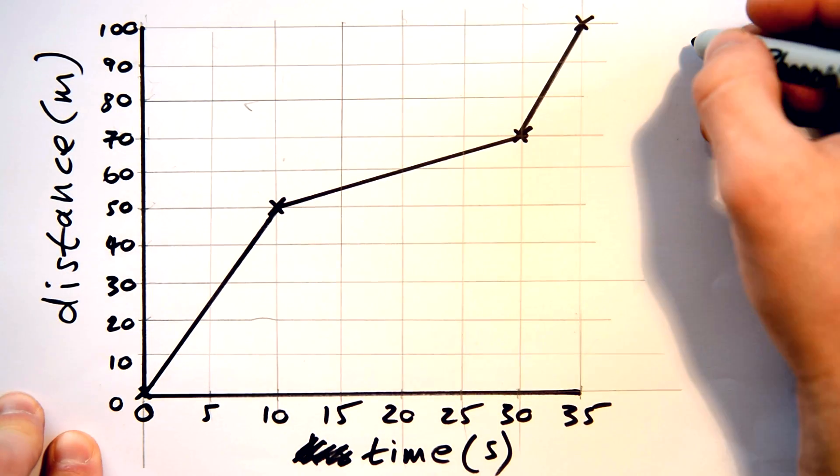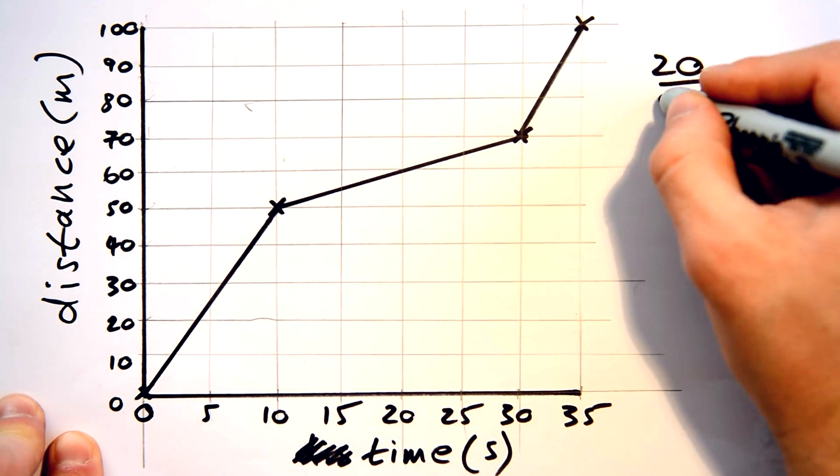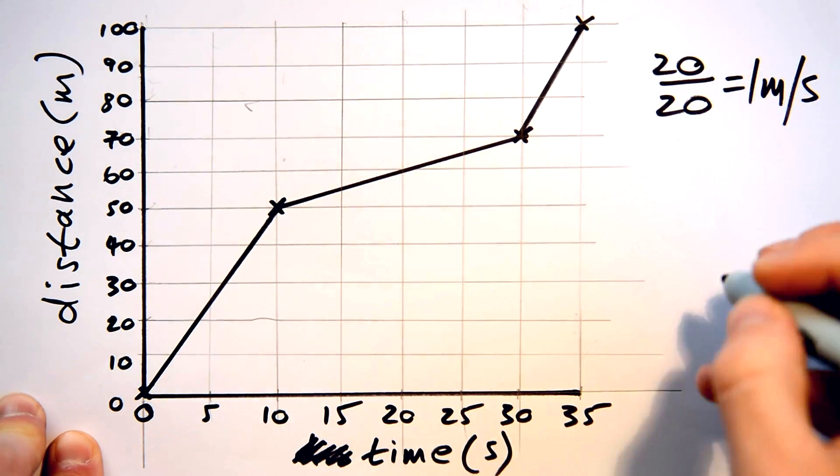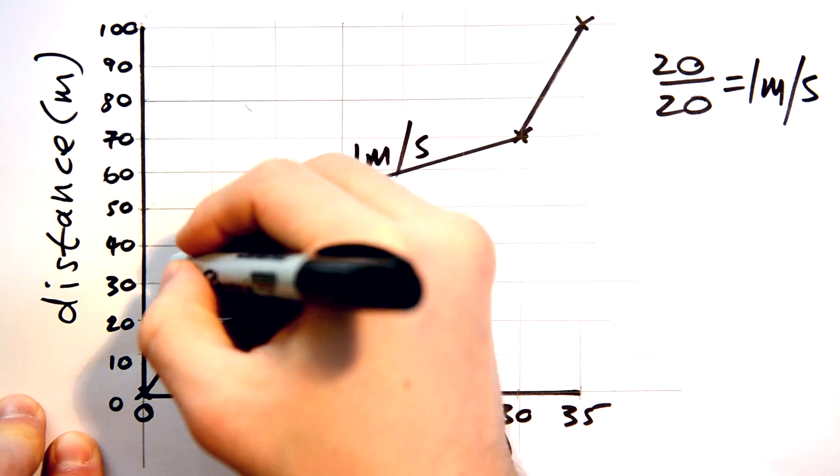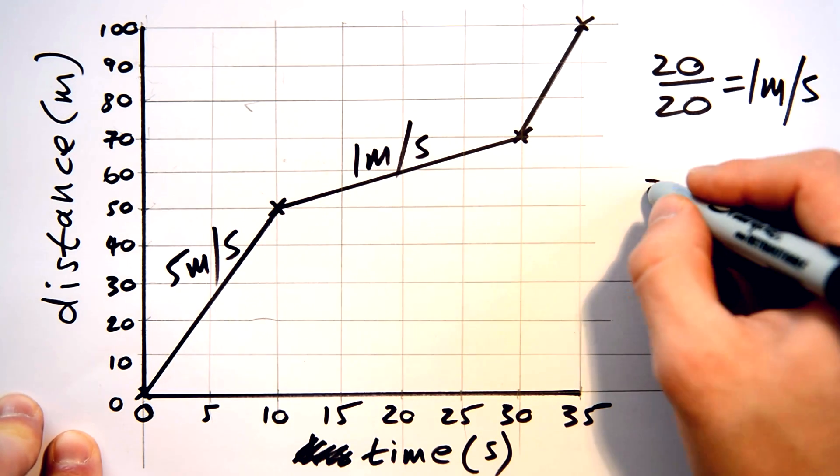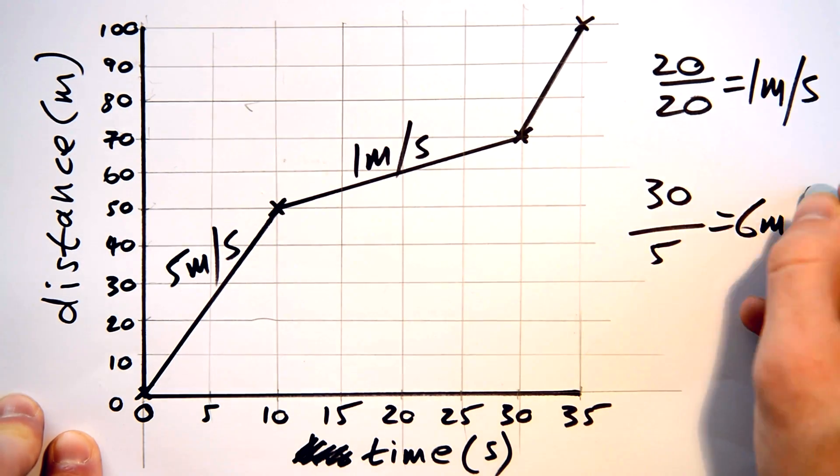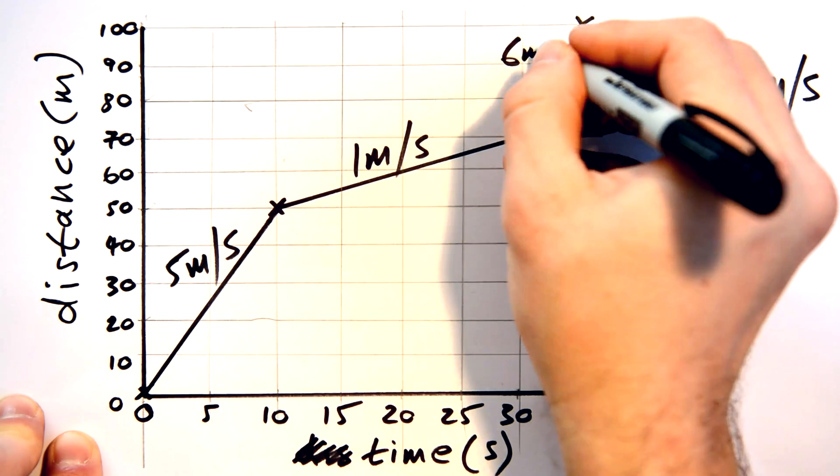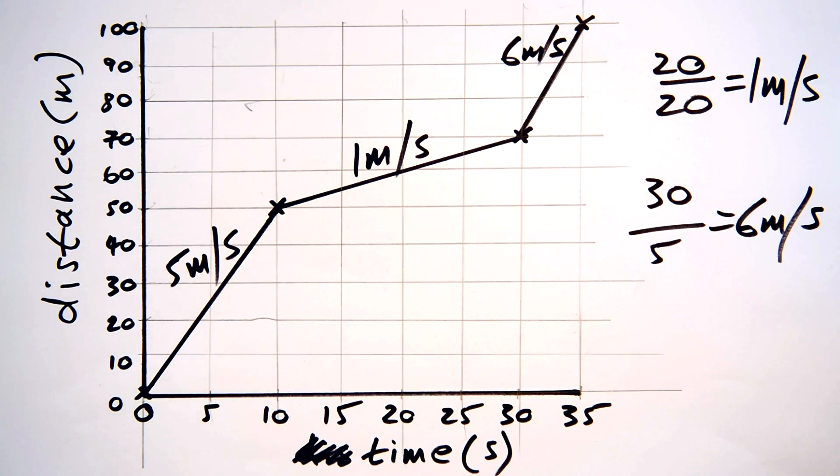Let's see how he got on then. He took 20 seconds to go over 20 meters of cars, so the gradient equals 20 meters divided by 20 seconds, so his speed is 1 meter per second. The final stretch of 30 meters took him 5 seconds, so 30 meters divided by 5 seconds equals 6 meters per second. Well done if you got those right.